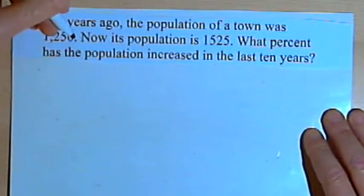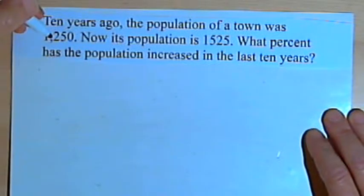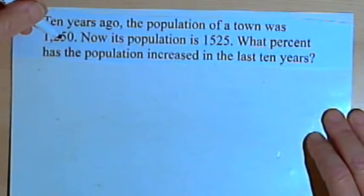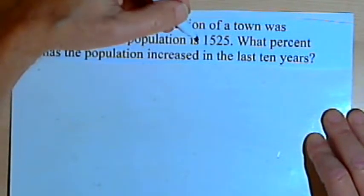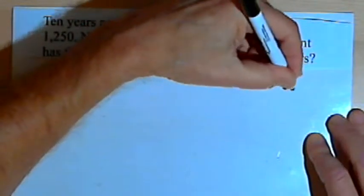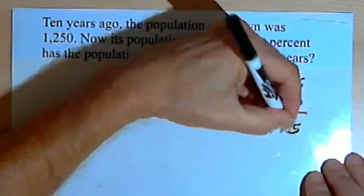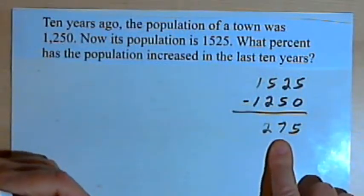First, we've got to find out how many more people there are now than there were 10 years ago. And then we want to find out what percent that is of the number of people there were 10 years ago. So let's find out how many more people we have. That would be the current population, 1,525, minus the population 10 years ago. When we subtract this, we find out that the population has increased by 275.